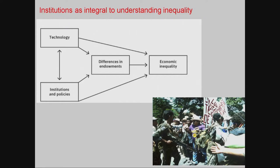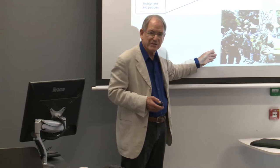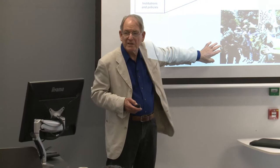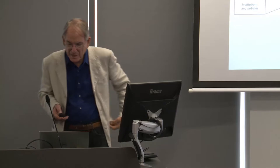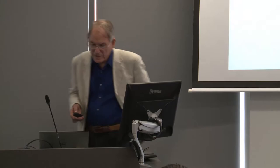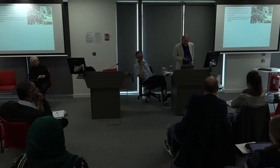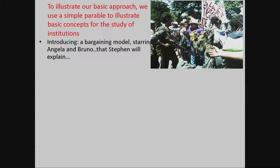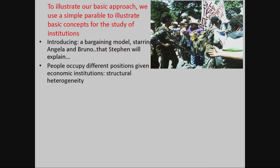We think that activities like collective action and the use of coercion — this is a demonstration in El Salvador during the Civil War — are important parts of how the income distribution is determined. The first real problem students study about looking at inequality is the fable of Angela and Bruno, which is famous around the world. It's a bargaining problem, but it's based on a very simple idea: people occupy different positions given economic institutions — owners, non-owners, voting rights or not. The interactions in which they engage may be voluntary or coerced.